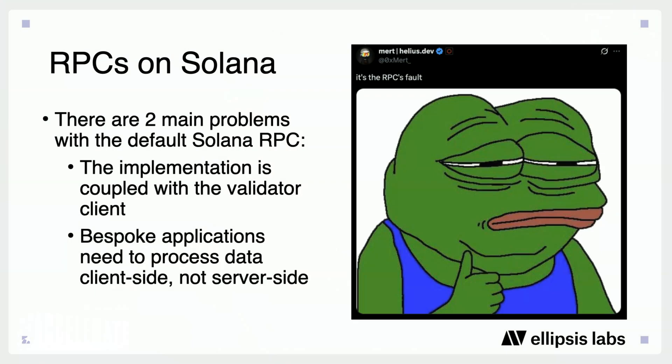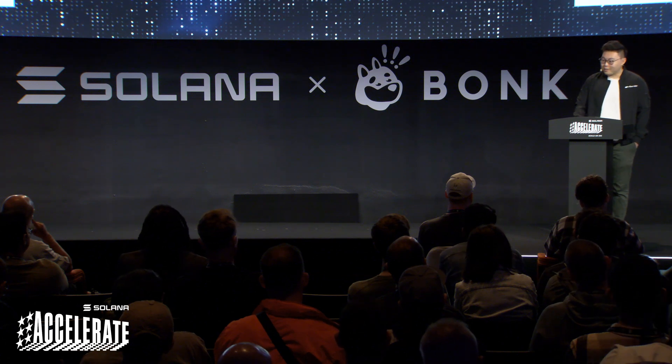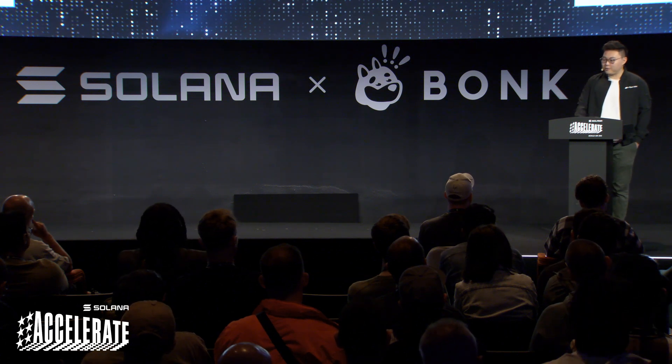Sadly, this is not the case with the Solana RPC. With Solana, there are two main problems. The first, which the previous slide directly relates to, is that the read RPC implementation on Solana is directly coupled with the validator client that's responsible for writing state updates. The second problem is that even after the RPC serves the user's data, the client-side application needs to perform a lot of bespoke computation to make that data usable. Many times it actually is the RPC's fault, unfortunately. But I'll talk about how Atlas solves this.